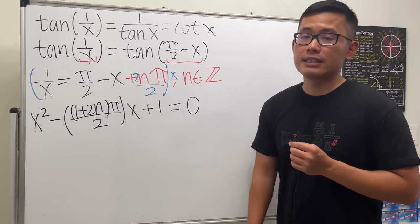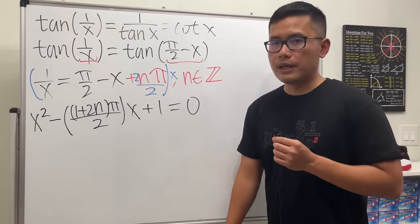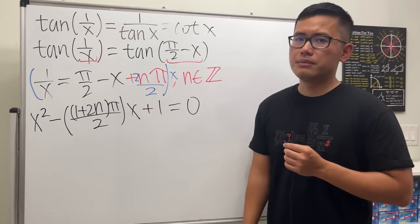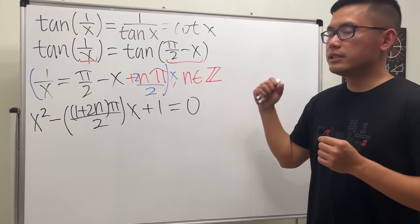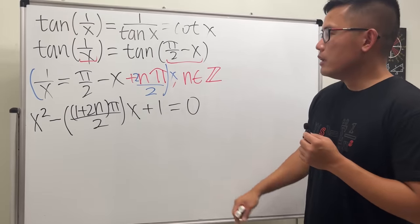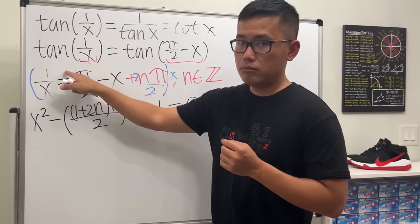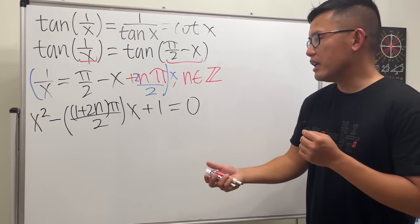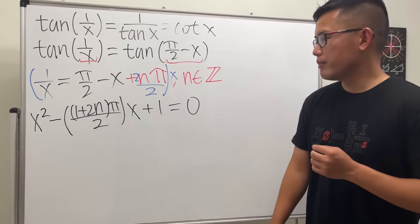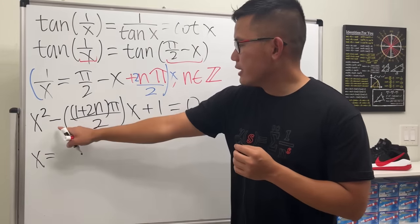Before we proceed, note that if you look at the answer on WolframAlpha you will see they have 1 − 2n instead of 1 + 2n here. That's okay because n is just an integer, meaning it can be any positive or negative whole number. You can also think of it as putting a ±2nπ, which is why we end up with a negative sign there. So don't let that bother you too much.